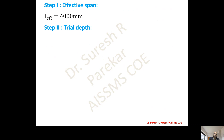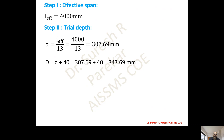Effective span is 4000 mm, taken directly as effective span. For trial depth, we use L_eff / 13 = 4000 / 13 = 307.69 mm. Adding cover d' = 40 mm, we get 347.69 mm, so we provide D = 350 mm and effective depth d = 310 mm.